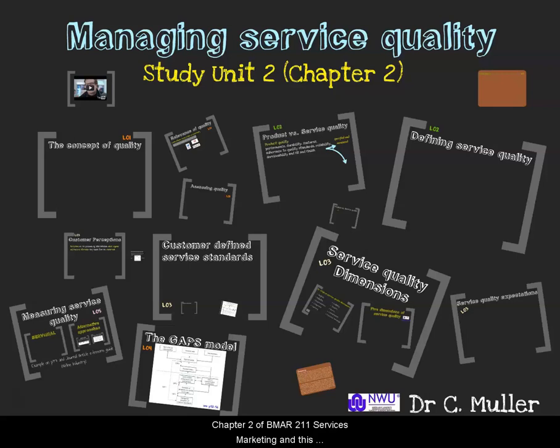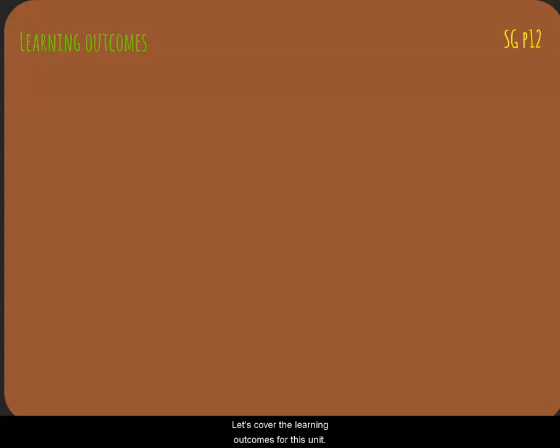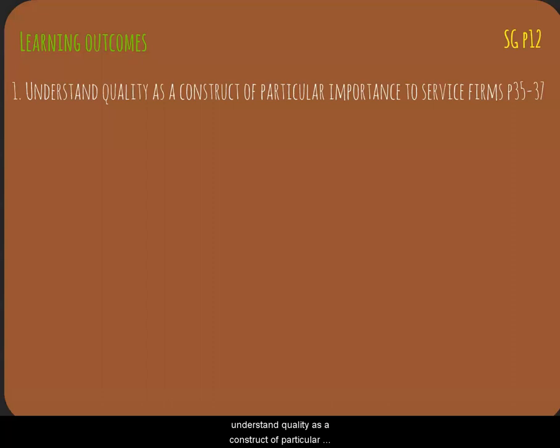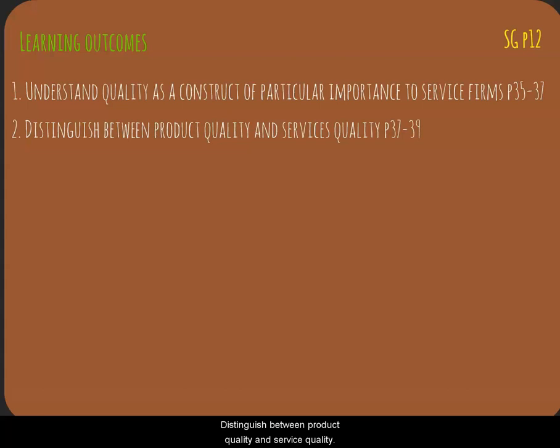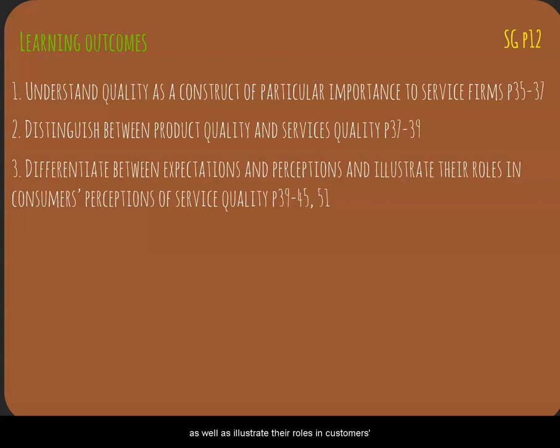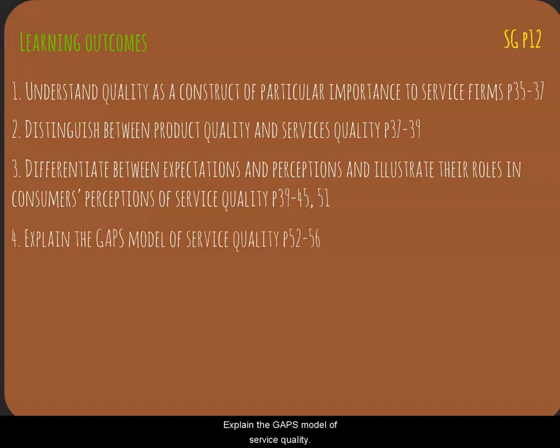Let's cover the learning outcomes for this unit. First, you need to be able to understand quality as a construct of particular importance to service firms, distinguish between product quality and service quality, differentiate between expectations and perceptions and illustrate their roles in customers' perceptions of service quality, then explain the GAPS model of service quality, and differentiate between the various methods of measuring service quality.